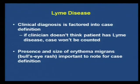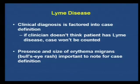For Lyme disease, the case definition is very complicated, but they really want to know the presence and size of the bullseye rash — it has to be a certain number of centimeters. Lyme disease is unique in that if the clinician doesn't think the patient has Lyme disease, the case will not be counted. So local public health may call you and say, 'Do you think this person has Lyme?' — even if they have a positive test. If you say no, the follow-up is done and it won't be counted as a case.